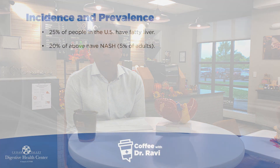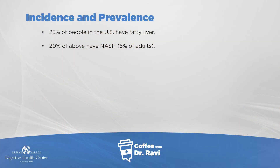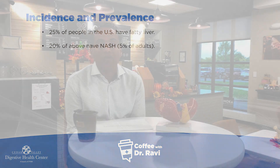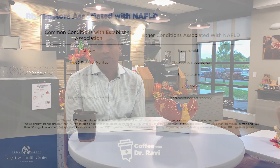If we look at how common it is, it is indeed very common. About 25 percent, or one in four people in our country, have fatty liver, and about a fifth of them — which is about five percent of the general population — can have inflammation or NASH. So one in four people would have fatty liver, and about a fifth of that percentage will have inflammation.